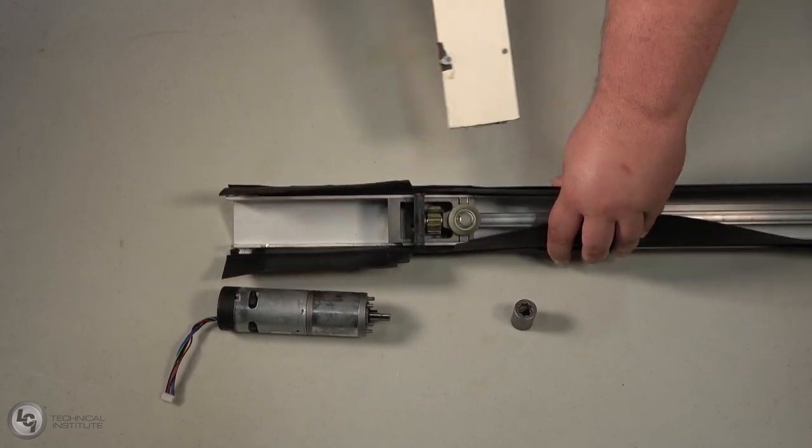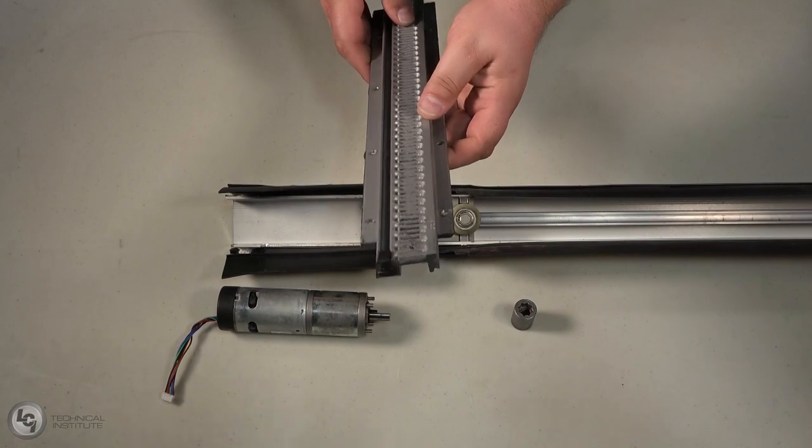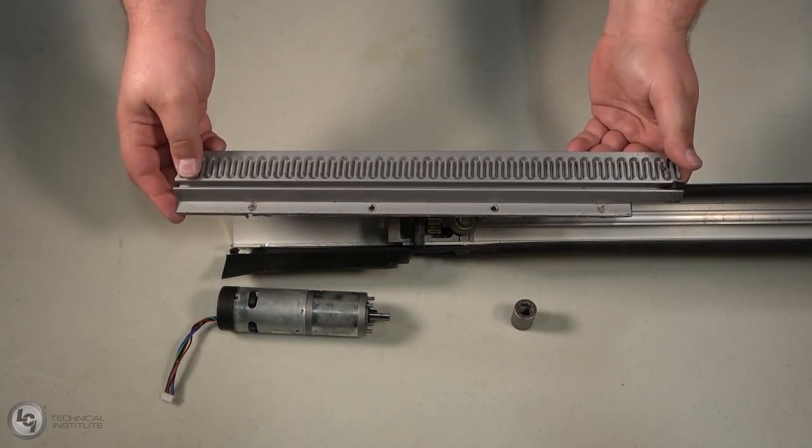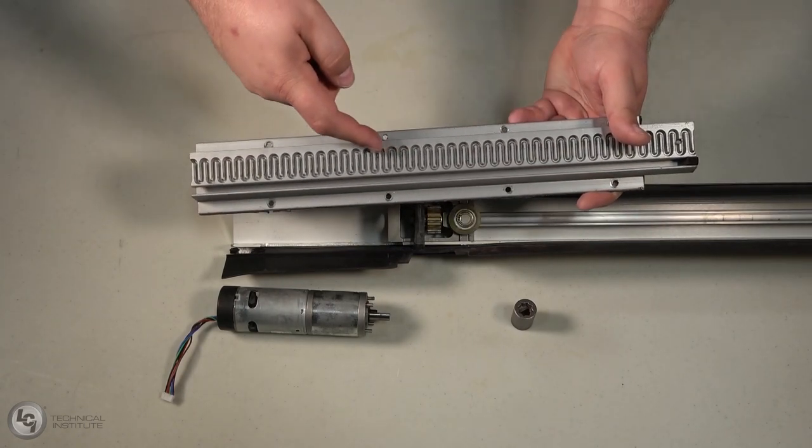While looking at them, look down the length to see what the wear pattern looks like. Look for any damage to the gear track or any damage that would necessitate the replacement of the gear racks themselves. If you notice any dirt, debris, or residue left on the gear racks, take this time to clean them.